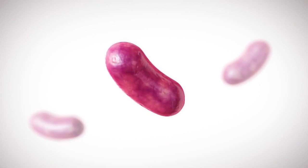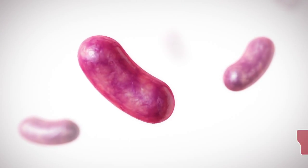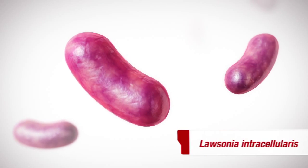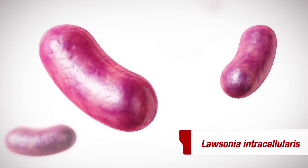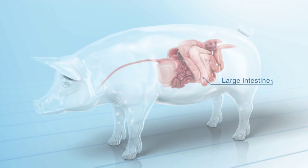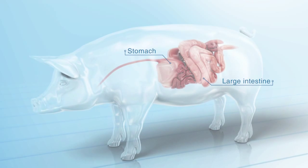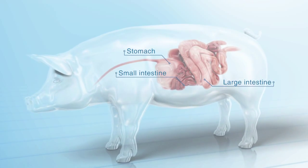The cause of ileitis is a widespread bacterium, Lawsonia intracellularis. Taken up orally, this pathogen passes through the stomach and reaches the small intestine.